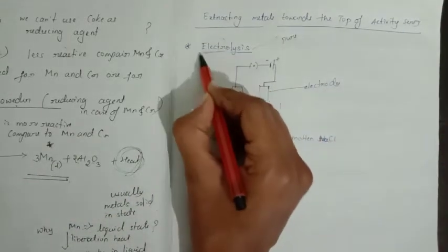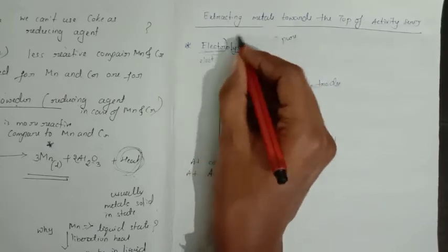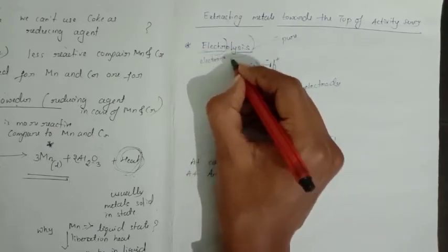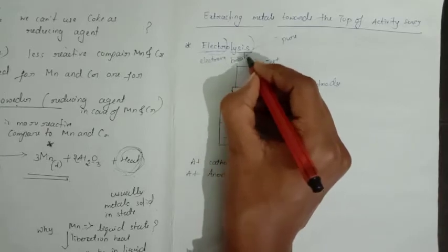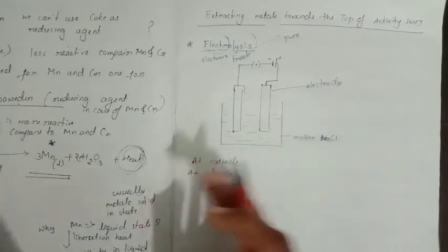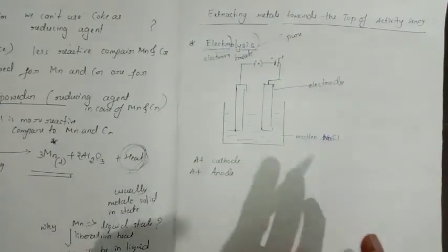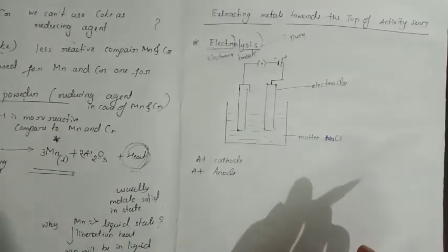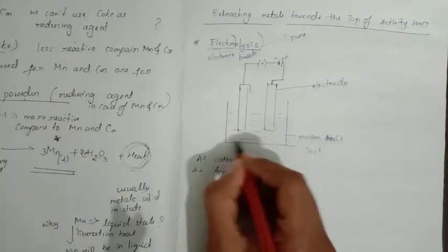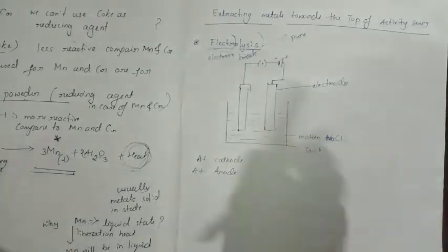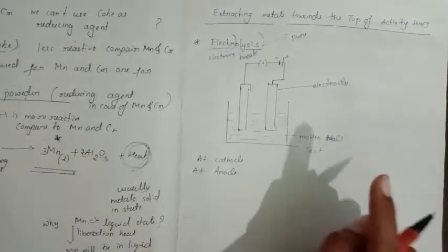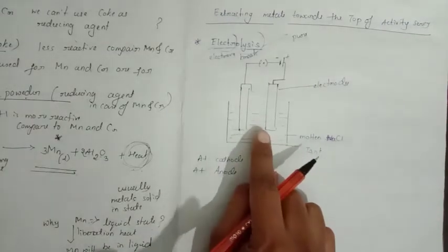Electrolysis: 'electro' means electrons, and 'lysis' means breaking up. In this process, a molecule is split into ions. In the electrolysis setup, we take a tank or flask containing an electrolyte solution. The choice of electrolyte depends on which metal you want to extract.